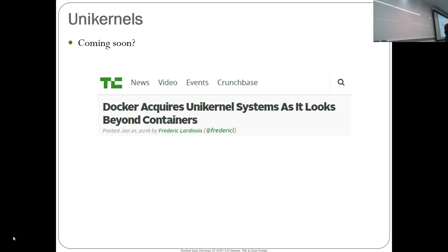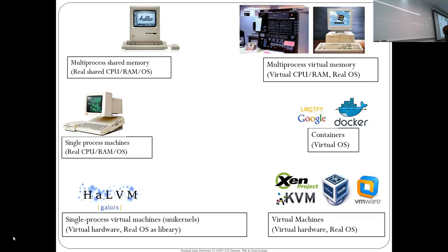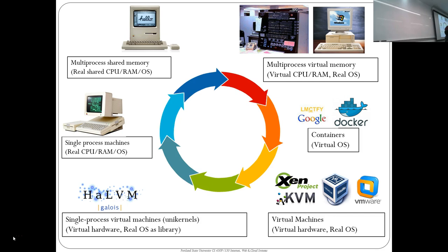Docker acquired a unikernel systems company as a way of adding to their services. Running simple microservices as a unikernel might give you cost savings. We've now come full circle: we started with a single process real machine, and with unikernels we're back to a single process machine — just with virtual hardware added. It's ironic that it took 40 years to get back to basically where we started, just with that little virtual hardware piece at the bottom.